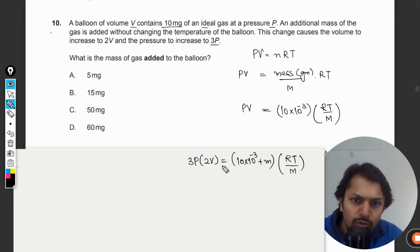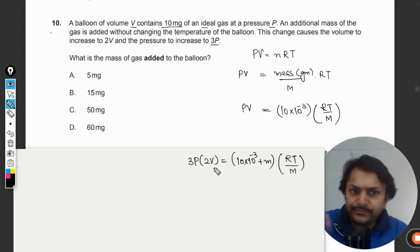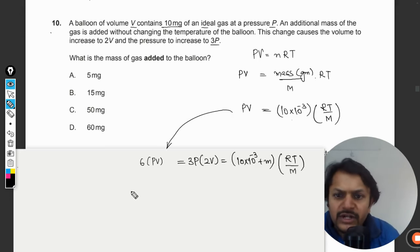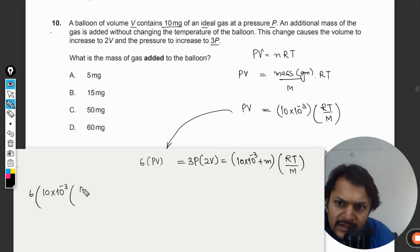So what we do? We can divide these two equations, or we can find the value of PV and we can equate these two values. So this can be written as 3 times 2 is 6, so 6PV. So this PV can be substituted here, so the equation becomes 6 into this is equal to this value.